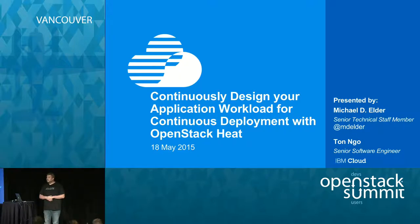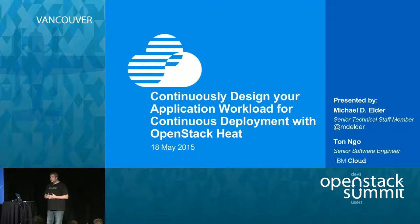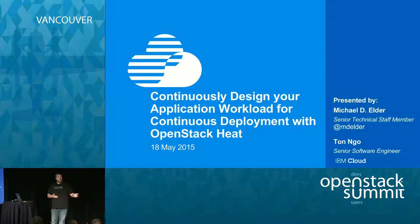Welcome everybody. My name is Michael Elder, I'm a senior technical staff member with IBM. I've worked in product development for going on eight or ten years, and over the last three or four years we've been looking at DevOps, cloud, continuous delivery, and trying to understand how to help our clients do that better. Today I want to talk about what we've been doing in the space with OpenStack — both using Heat and virtual images, as well as experimenting with containers and extending that into platforms like Cloud Foundry. I'm also going to be joined by Tan who will help with the Magnum part.